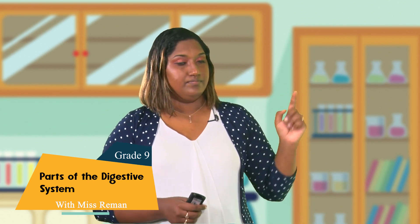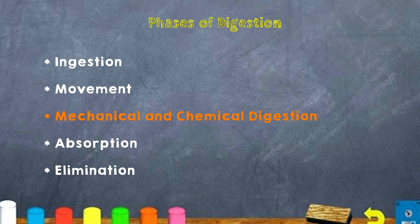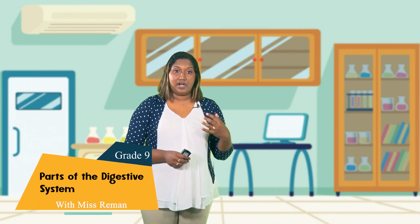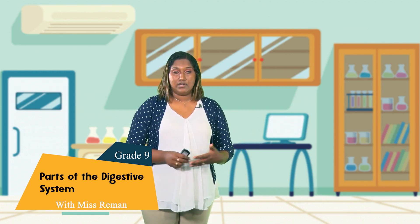The phases of digestion include: 1) ingestion, 2) movement, 3) mechanical and chemical digestion, 4) absorption, and 5) elimination. Simply put, ingestion is when we take in food. It then moves through from the esophagus to the different parts. There is mechanical and chemical digestion occurring, absorption of your minerals and nutrients, and then elimination where you pass it out.